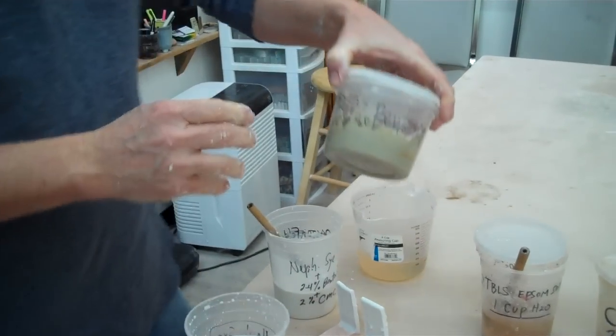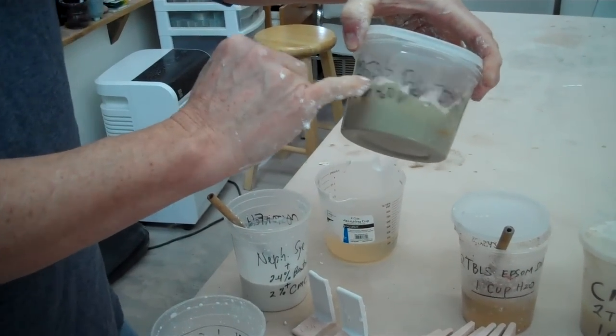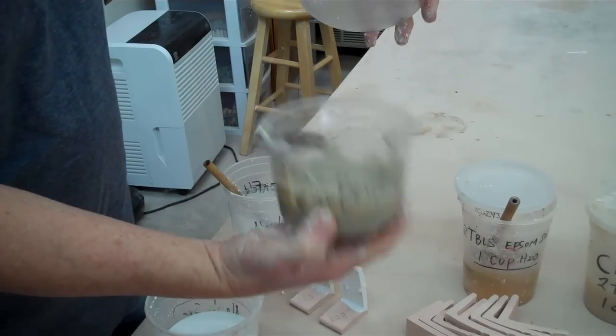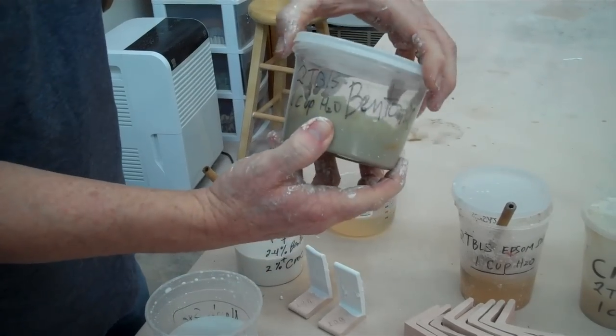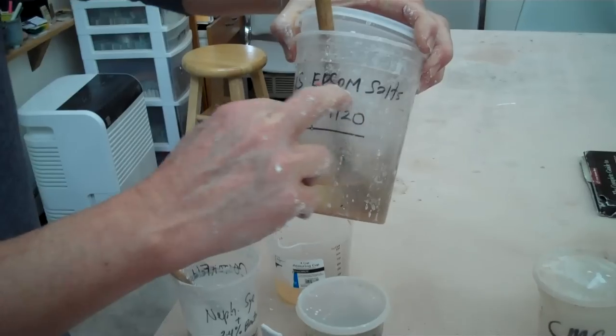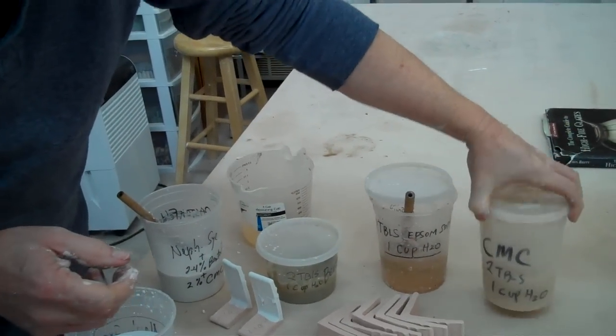Now what I've got over here is the bentonite. And instead of doing it dry, I usually mix it up two tablespoons and a cup of water. And I just let it sit there overnight or for a long time. And then I can just take a scoop out. Same thing with my Epsom salts. I have two tablespoons and a cup of water. And the same thing with my CMC.